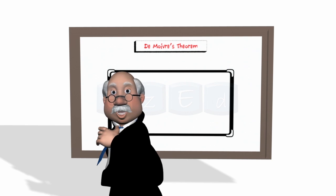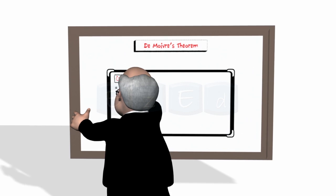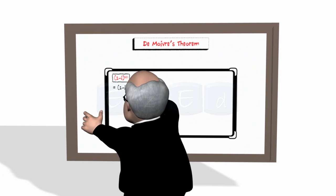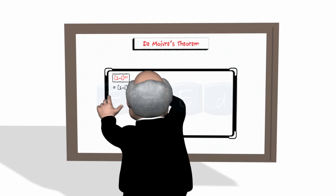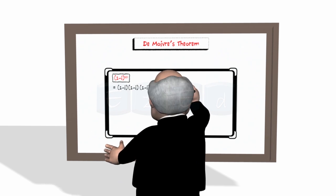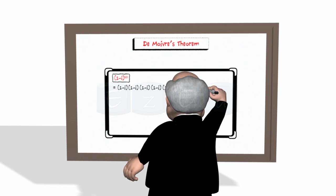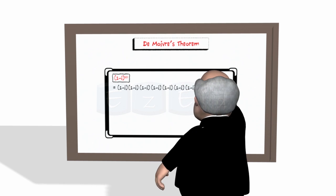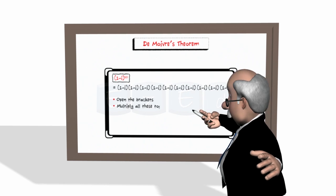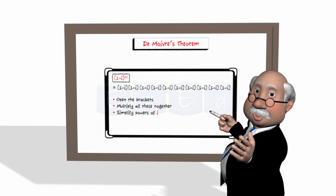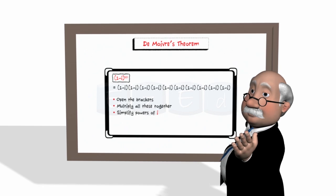Find the value of 1 minus i raised to 10. This is equal to 1 minus i, multiplied together 10 times. You would need to open the brackets and multiply all these together and simplify powers of i. Tedious!